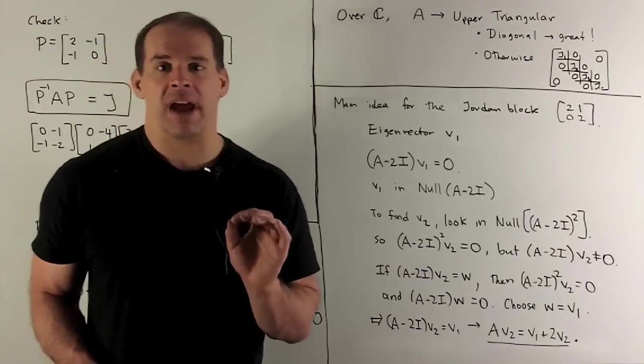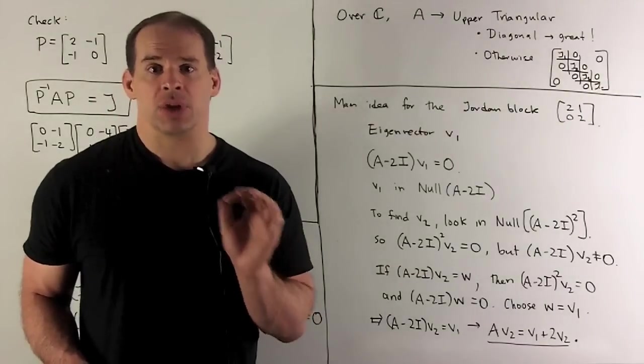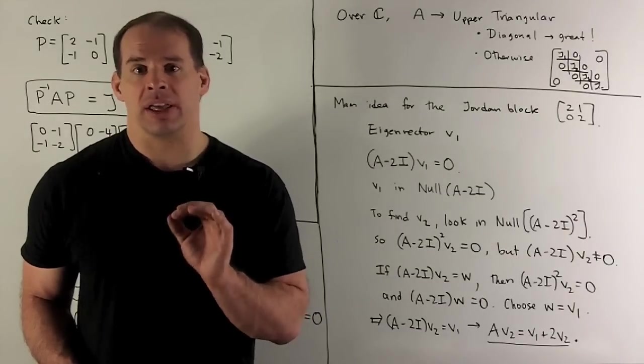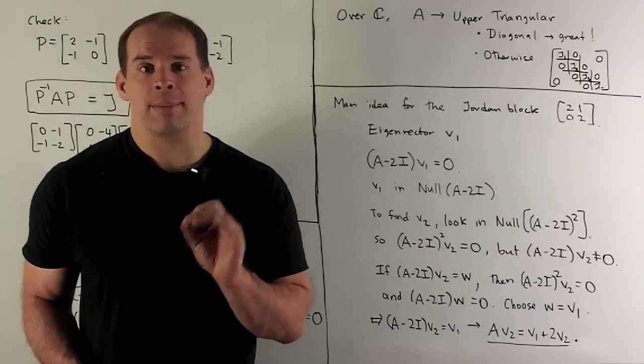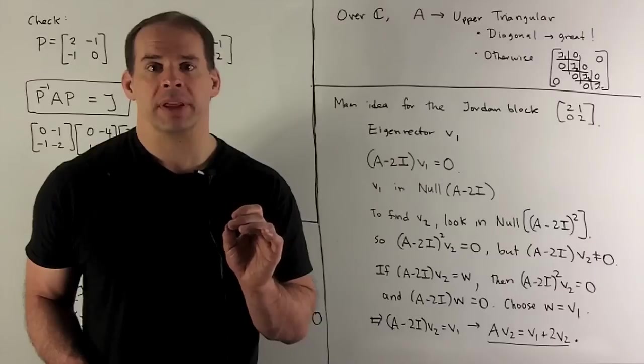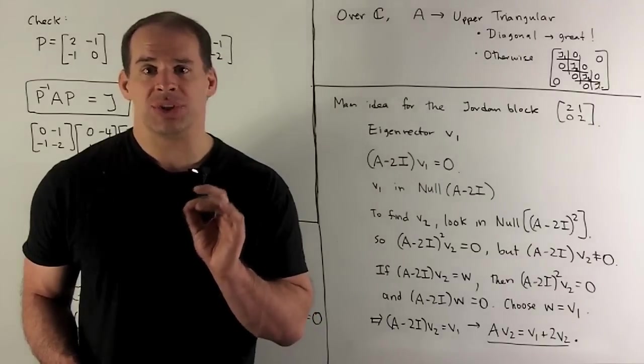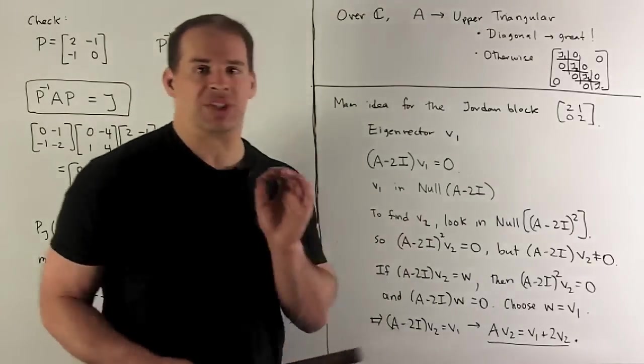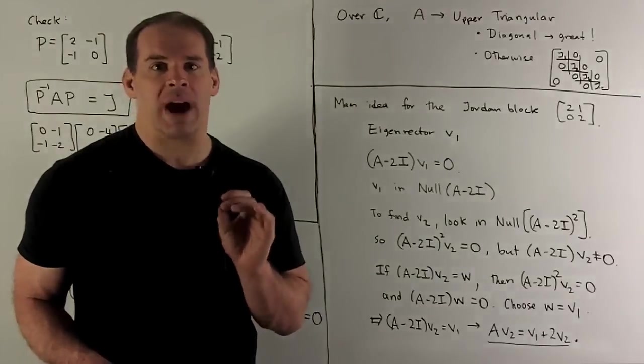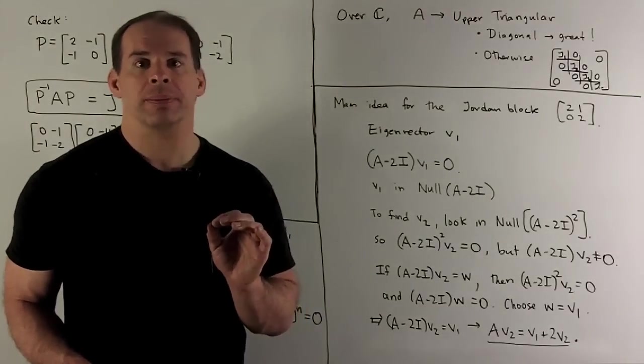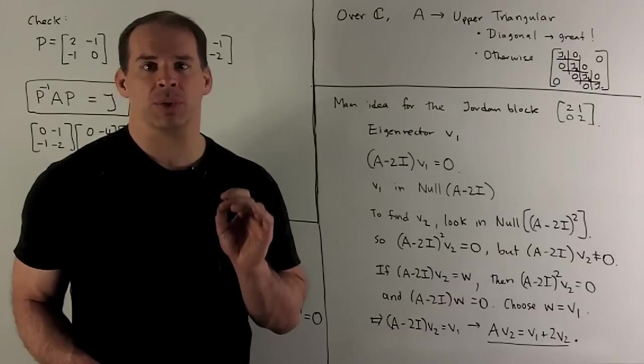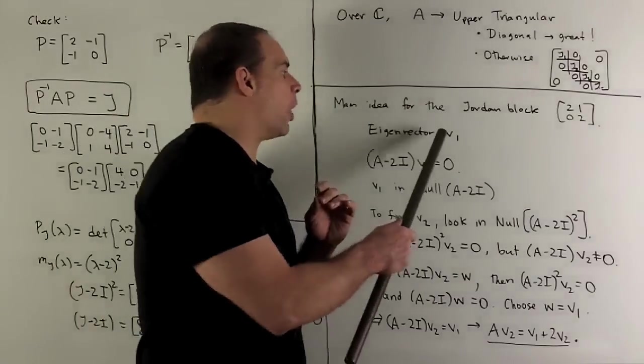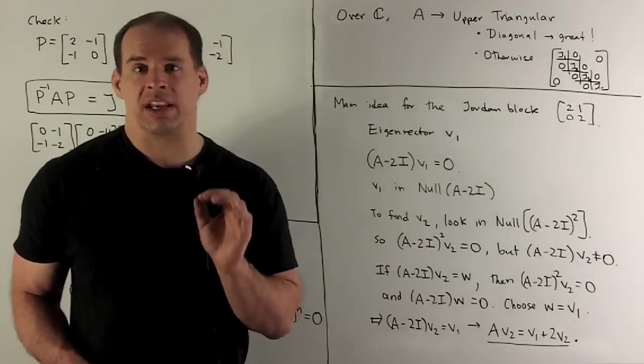We couldn't find another eigenvector to fill out our basis. So, where do we look for another basis vector? The place to look is the null space of (A - 2I)². That's going to mean V2 satisfies (A - 2I)²V2 = 0, but (A - 2I)V2 is not 0. If (A - 2I)V2 = 0, it's an eigenvector, which means it's in the span of V1. And then we have no chance of getting a basis.